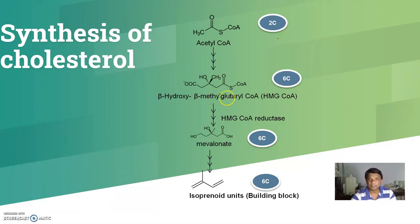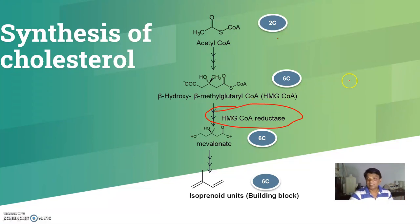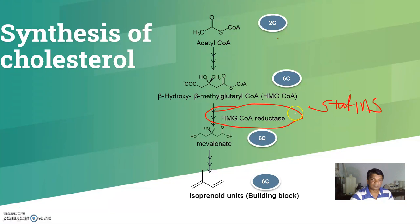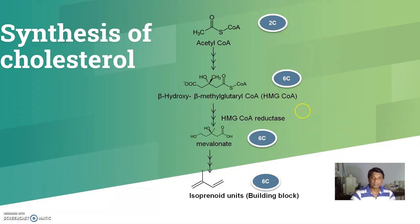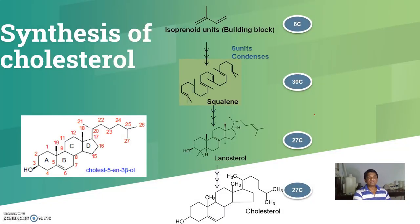One important enzyme in this pathway is HMG CoA reductase, which is very important for pharmacy students. Statins are compounds used to block HMG CoA reductase, thereby stopping cholesterol synthesis. From mevalonate, isoprenoid units are synthesized.